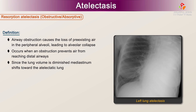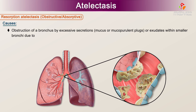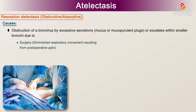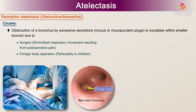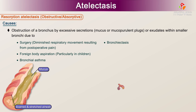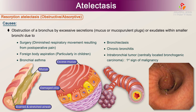Since the lung volume is diminished, the mediastinum shifts towards the atelectatic lung. Causes include obstruction of a bronchus by excessive secretions, mucus, or mucopurulent plugs, or exudates within smaller bronchi due to surgery, diminished respiratory movement resulting from postoperative pain, chronic bronchitis, or intrabronchial tumour — including centrally located bronchogenic carcinoma, in which it may be the first sign of malignancy.